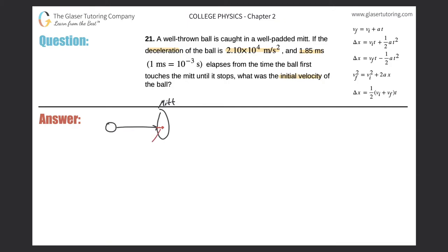Now the deceleration on this ball during this particular point is 2.1 times 10 to the minus 4, as it says in the problem. So the acceleration, since it's a deceleration, we have to put it in as a negative sign. So negative 2.10 times 10 to the minus 4 meters per second squared. And the time it takes to go from just touching the mitt to eventually coming to a stop is 1.85 milliseconds.